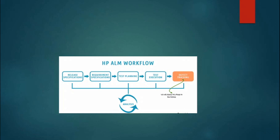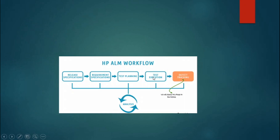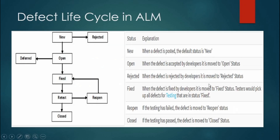Once you raise a defect in HPLM, it goes through the defect life cycle, and once the defect is fixed and tested by QA, it should be closed. The HPLM workflow starts from the release specification, where we create the release and cycle, then moves to requirement specification, test planning, and test execution — where we write and execute test cases — and finally defect tracking.